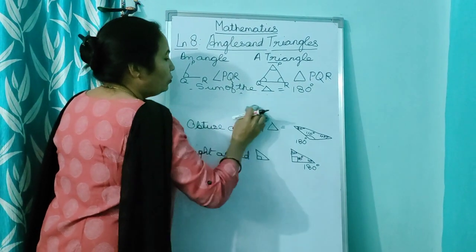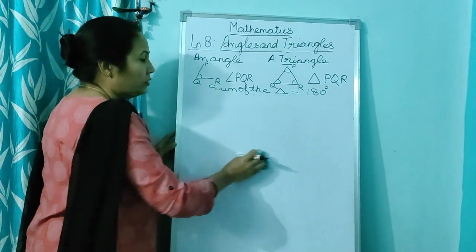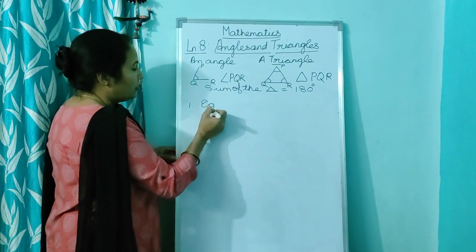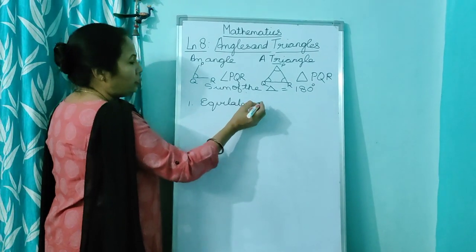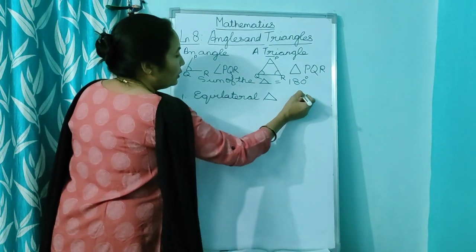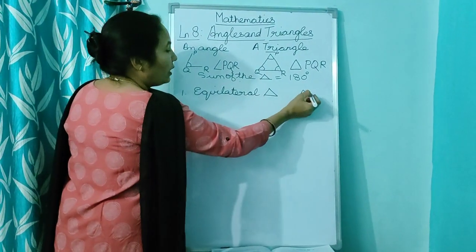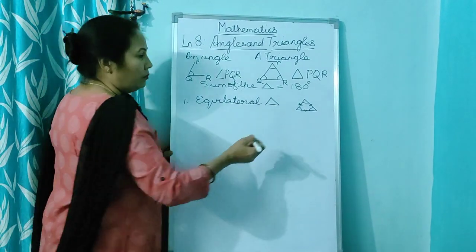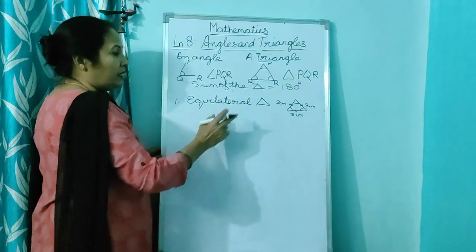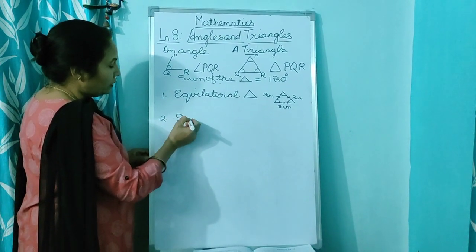Next, children, I am going to tell you about different types of triangles which you read according to their sides. The first one is equilateral triangle. Equi means equal, so here you have all three angles at 60 degrees and all three sides of equal measurement. If this is 3 centimeters, this is also 3 centimeters, and this is also 3 centimeters. They should be equal, and the sum will also be 180 degrees. Next is scalene triangle.